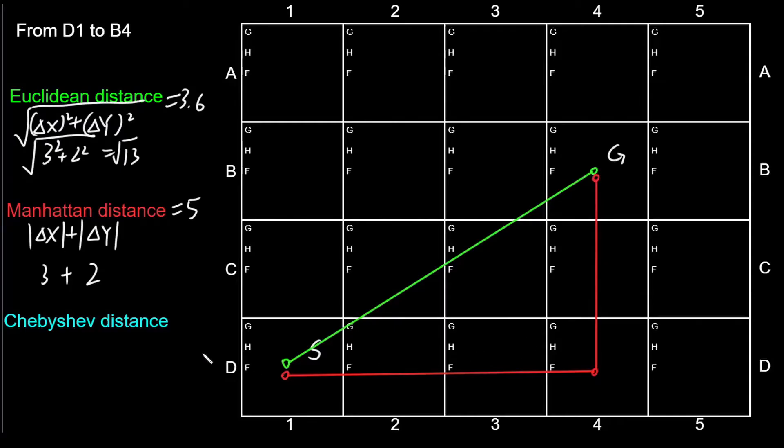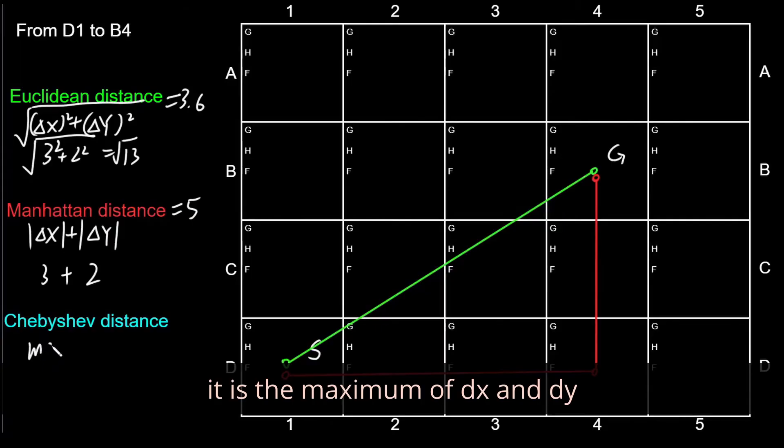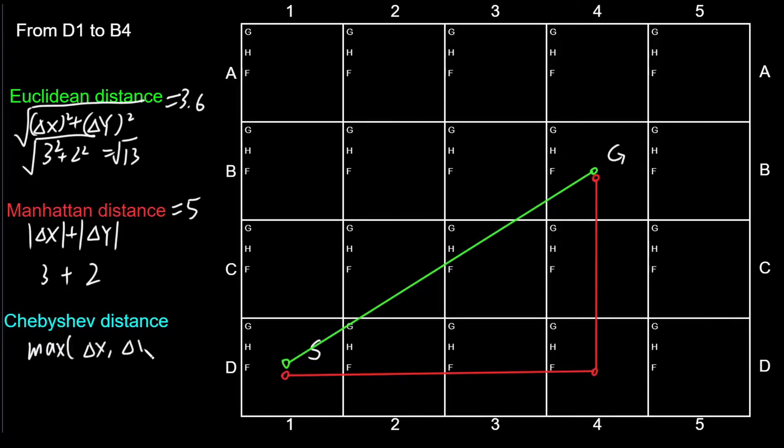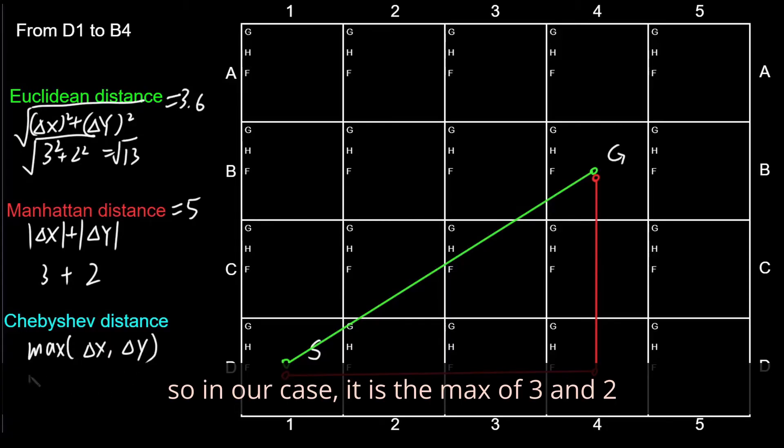And for the Chebyshev distance, it is the maximum of dx and dy. So in our case, it is the maximum of 3 and 2, so it is 3.